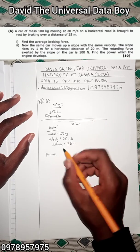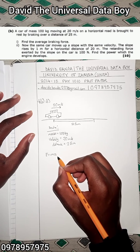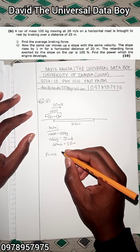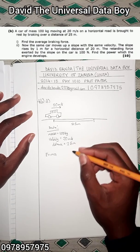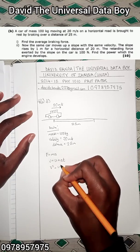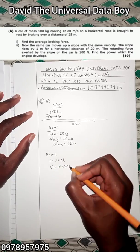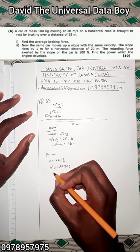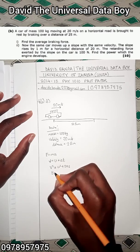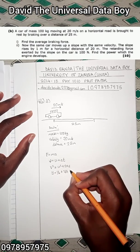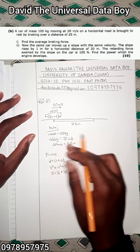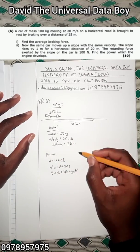We haven't yet found our acceleration, but we have our mass. So let's try to find our acceleration. There are kinematic equations that can help us: v = u + at, v² = u² + 2as where s is the distance, a is the acceleration, u is the initial velocity, and v is the final velocity. There is also y = y₀ + v₀t + ½at².